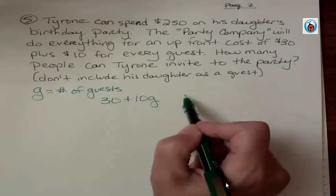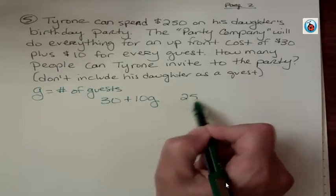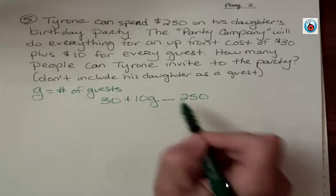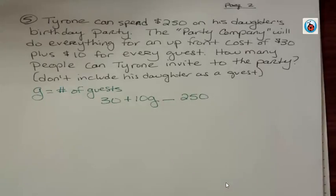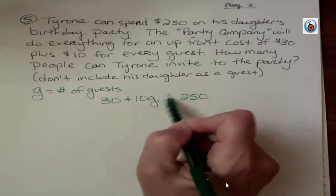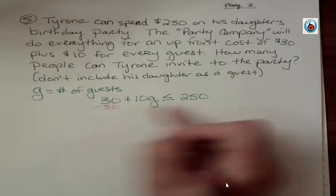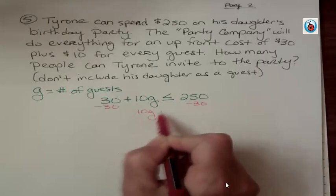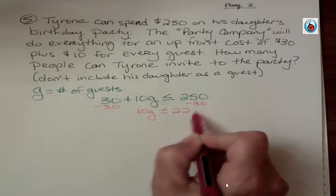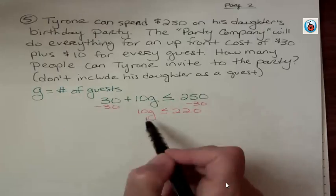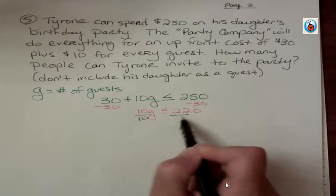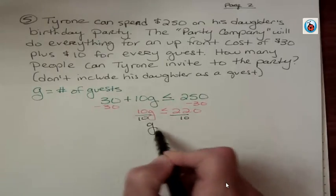Now we know that there's an upfront cost of $30 plus it costs $10 for every guest. $10 times G. Now we know that he can spend $250. He could spend exactly that. Could he spend more than $250? No. So it has to be less than or equal to $250. We can't go over $250. So let's subtract $30 from both sides and then divide both sides by $10. And that gives us G ≤ 22.